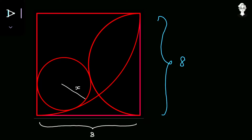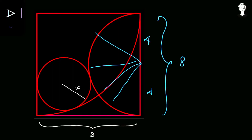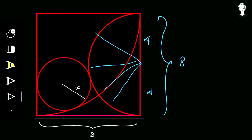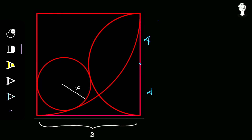Since the diameter equals 8, the radius becomes 4 — half the diameter equals the radius. Let's mark the center point of the semicircle, which is also the midpoint of that side. From the center to either end is 4, and all radii of the semicircle equal 4.